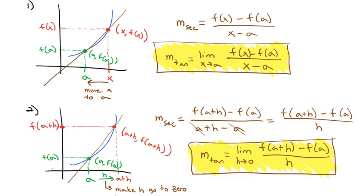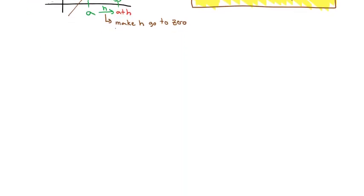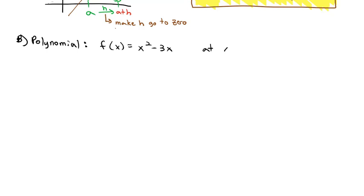We're going to work through three examples where we calculate the slope of the tangent line and also the equation of the tangent line, solving it both ways so we can compare how the two formulas work together. Our first example is a polynomial. We'll first find the slope, then the equation of the tangent line. The polynomial is f(x) = x² − 3x, and we're finding the slope at x = 1. First, f(1) = 1² − 3(1) = 1 − 3 = −2, so we're working with the point (1, −2).